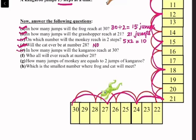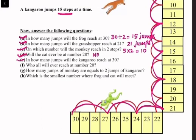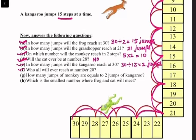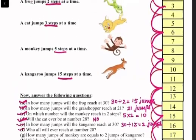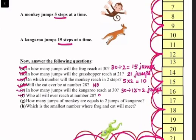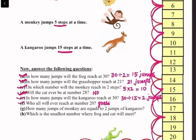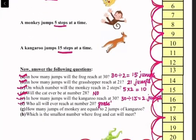(e) In how many jumps will the kangaroo reach 30? The kangaroo jumps 15 steps at a time, so it will reach 30 after 2 jumps — 30 divided by 15 equals 2. (f) Who will ever reach number 20? The grasshopper, frog, and monkey will all reach number 20.